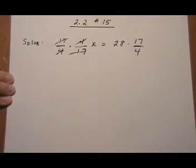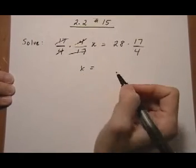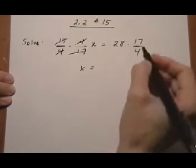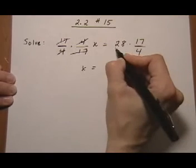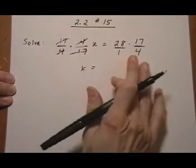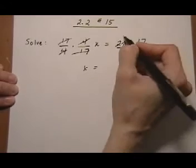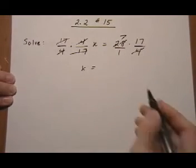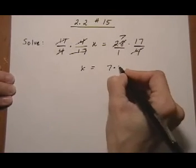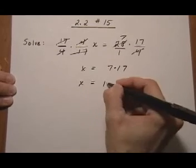So, these guys all cancel out, and we're left with x equals, and here we can do some simplifying. 4 divides into 28, and think of this as a 28 over 1 if you like to see it as fraction multiplying fraction instead. Sometimes it's easier to see what cancels that way. Leaving us a 7, so we get 7 times 17, or x is equal to 119.